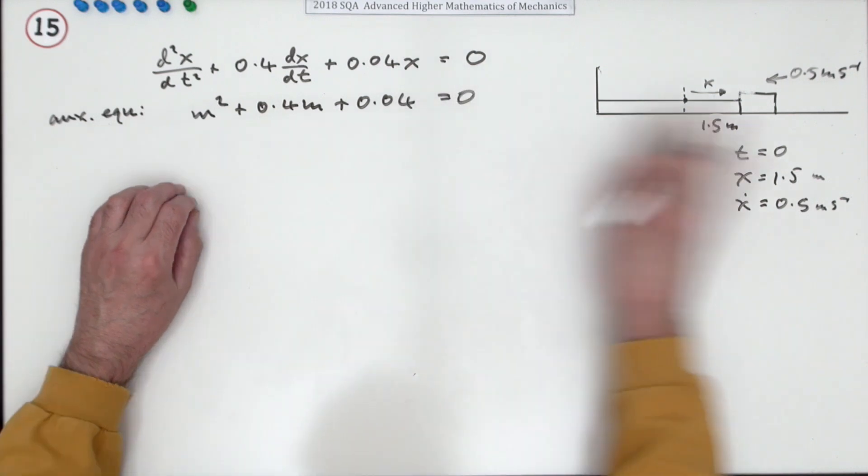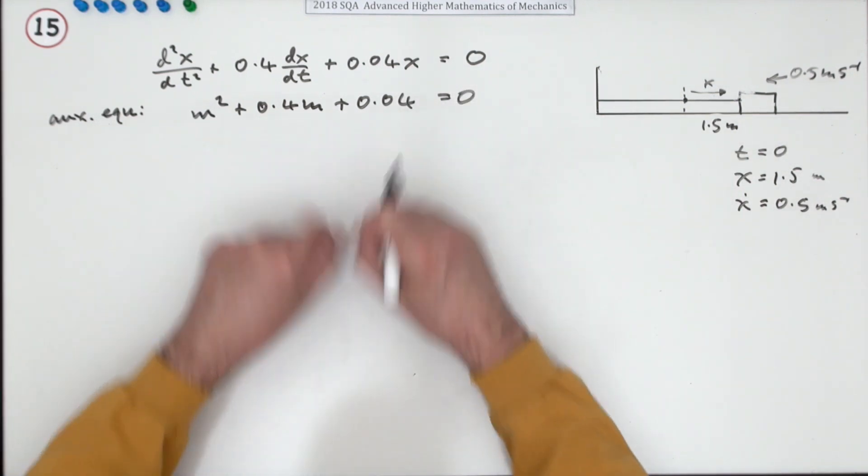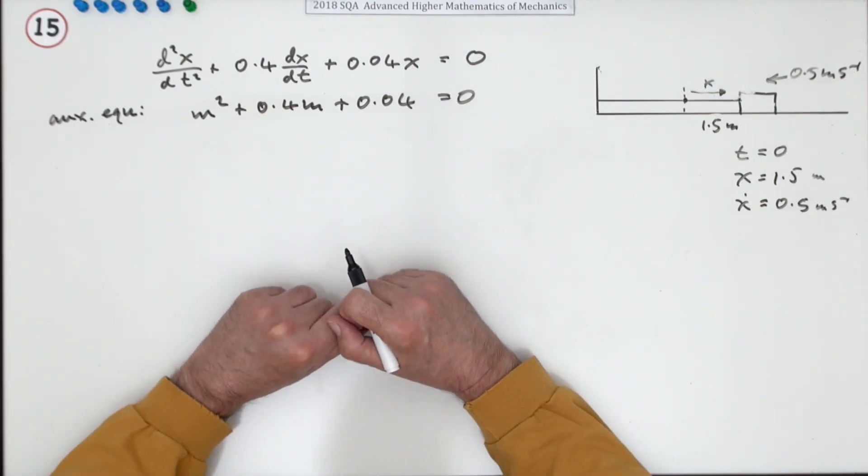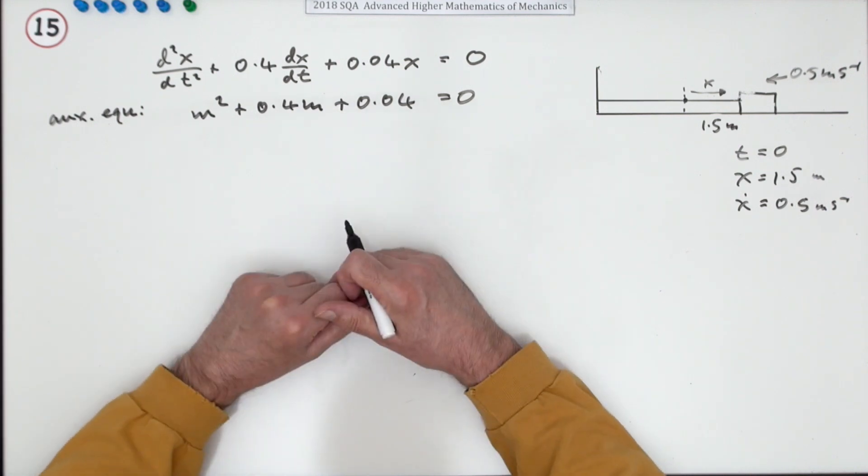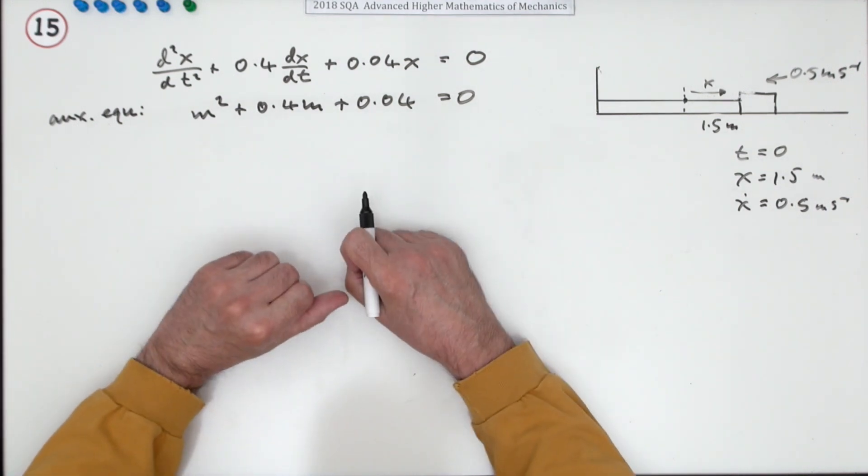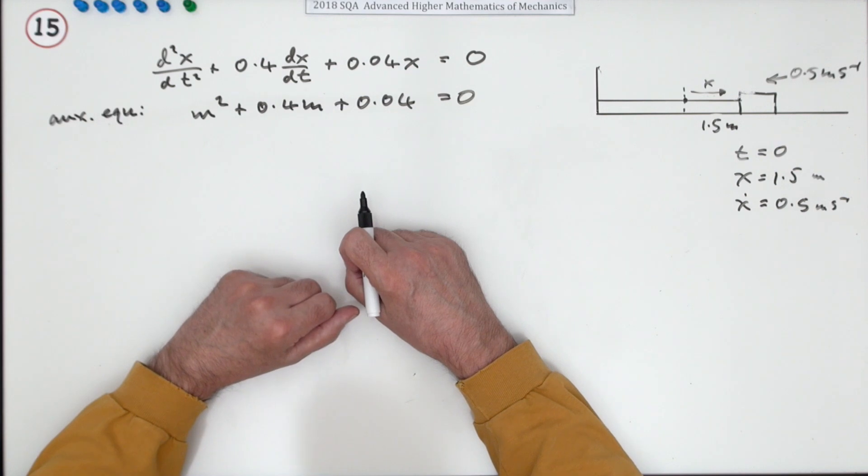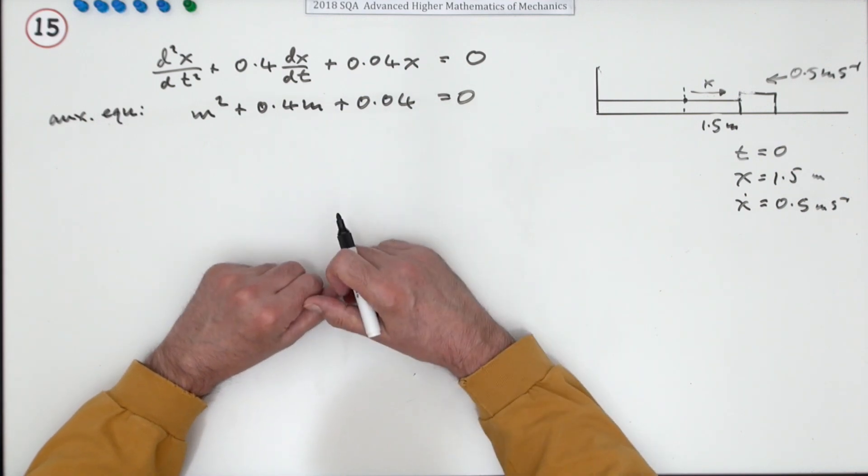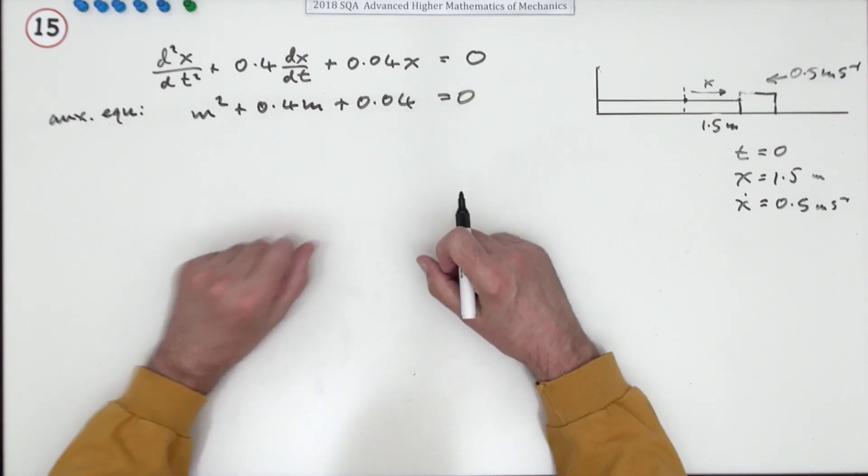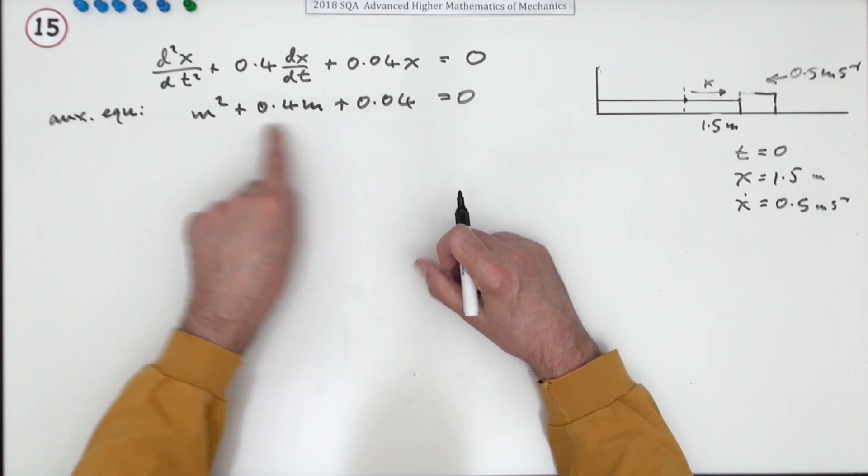That's a bit of a pest that you haven't got integers there, because you're used to factorizing it with integers, if it factorizes at all. Because you might have to use the formula, for instance, especially if you had imaginary roots. One way to check it, if you don't spot what's happening here, is to do the discriminant quickly.